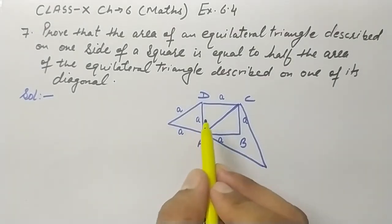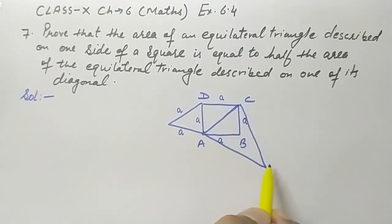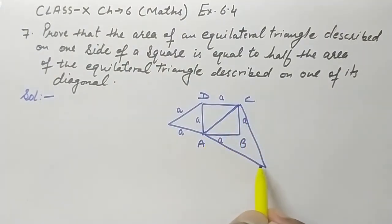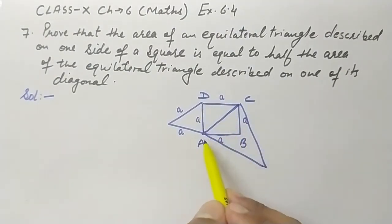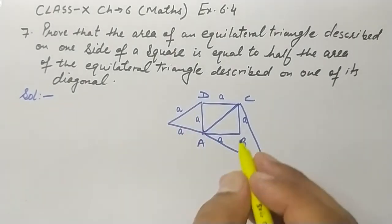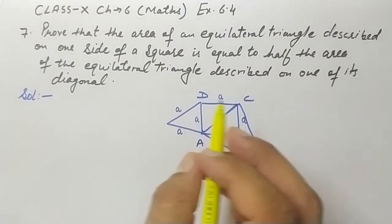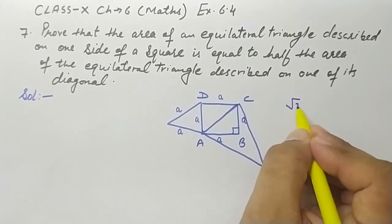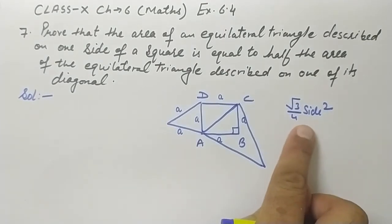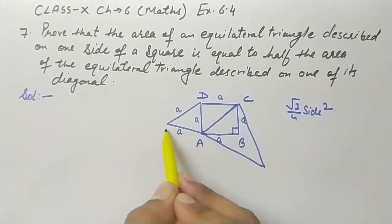We need to prove that the area of the triangle on the side is half the area of the triangle on the diagonal — or equivalently, the area of the triangle on the diagonal is double the area of the triangle on the side. We know that the area of an equilateral triangle is (√3/4) × side².